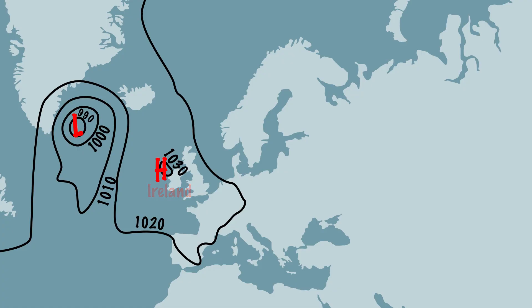In places where many isobars are close together there is a big difference in air pressure. Because of this the wind speed will be high. This is the case for example around the low pressure area.